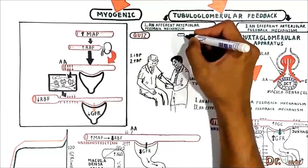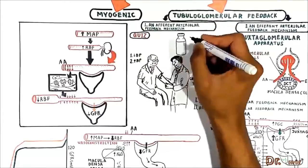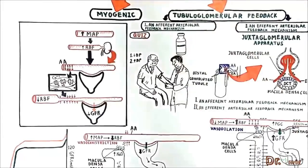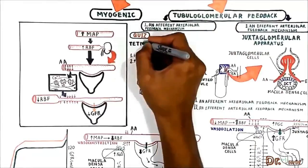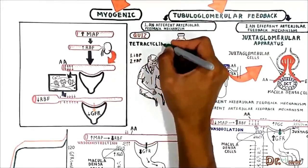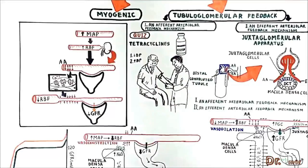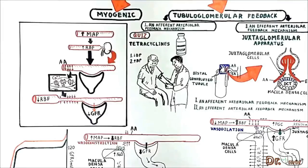If a patient is administered with high doses of tetracycline, what happens to GFR? Recall that high doses of tetracycline cause damage to the proximal tubules.